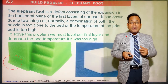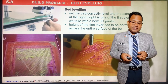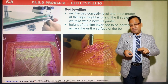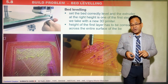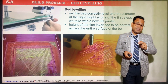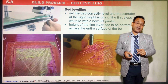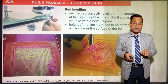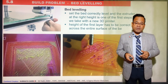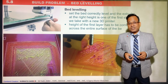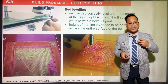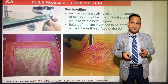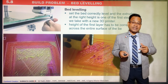Bed leveling is very important. In 3D printing, the machine bed must be checked to ensure it is perfectly level. Adjustment is needed before printing. Adjustment can be done via CNC or manually depending on the machine — whether it is a large or precision machine — but it must be checked.